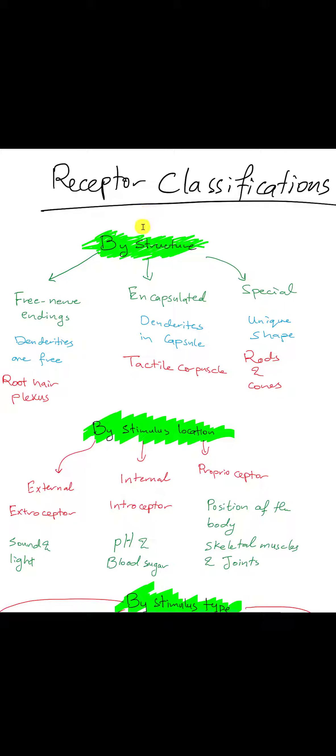For receptors, we can classify them through different ways. One way is by their structure. This depends on the dendrites.